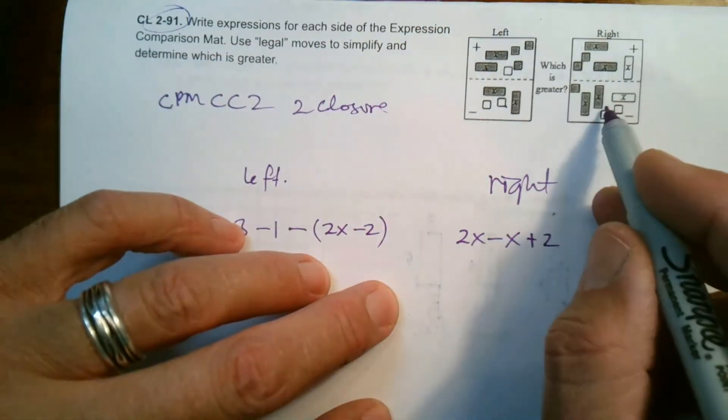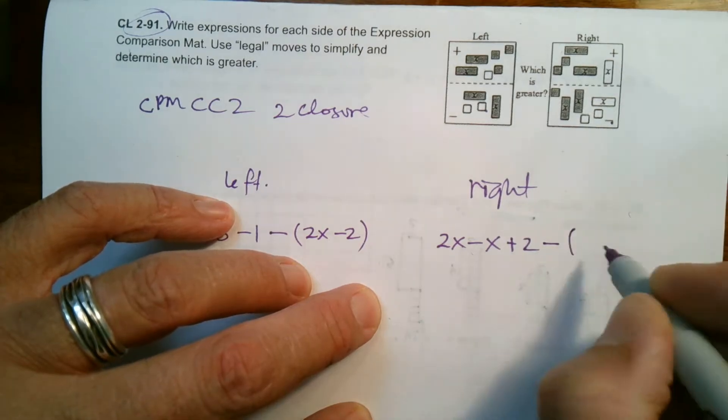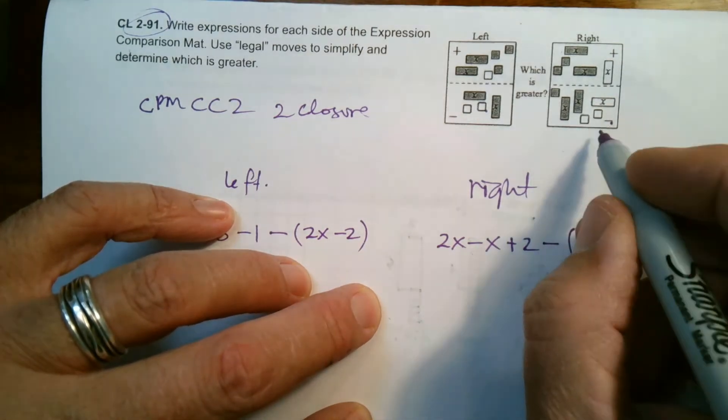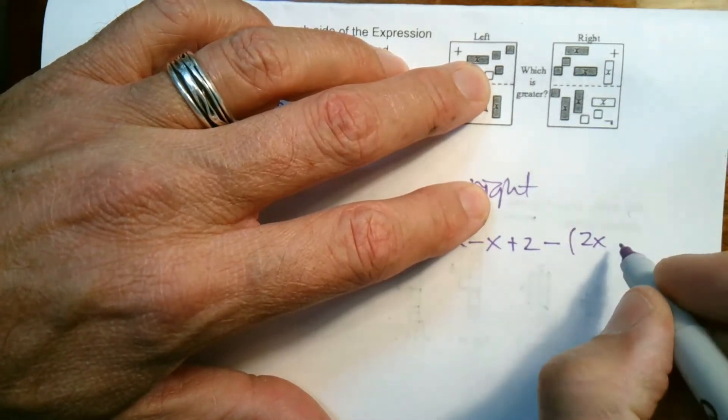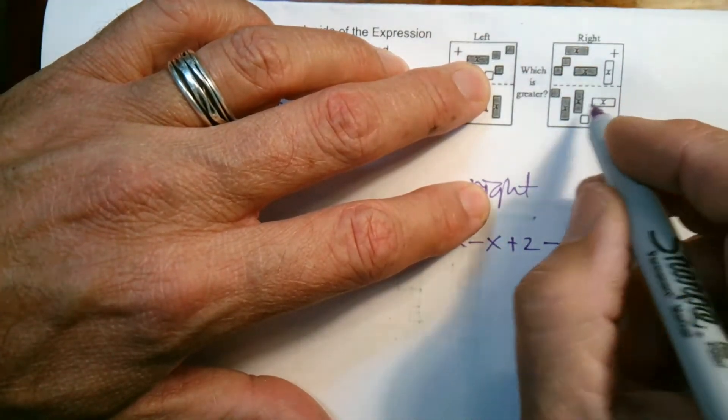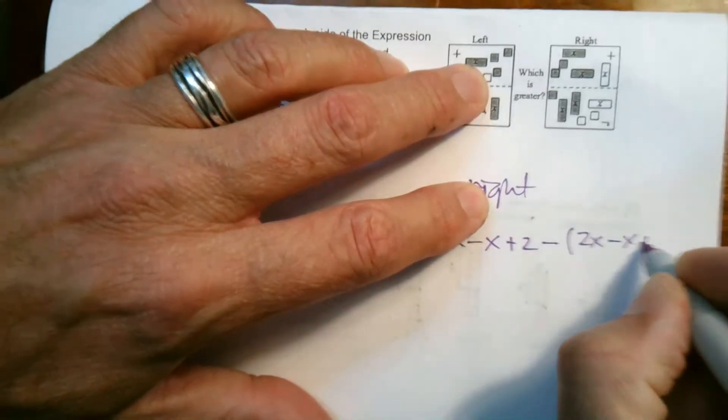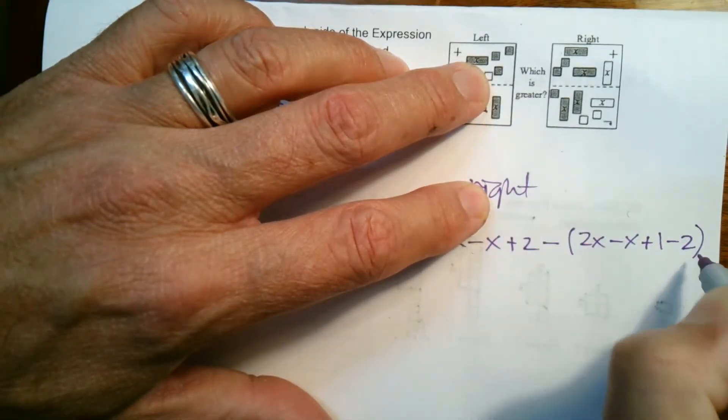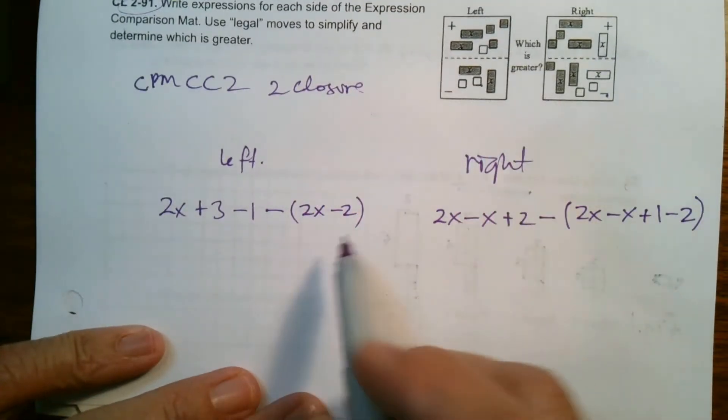And then on the bottom part of the mat, so it's minus, right? Because the bottom part is a minus, minus the quantity. And again, we've got two positive x's, a negative x, so minus x again, and then I have a positive one and two negative ones. So plus one, and then minus two. So those are the unsimplified expressions.